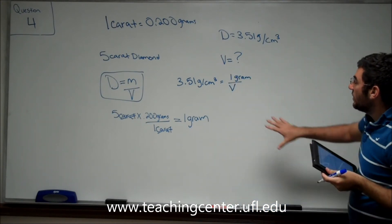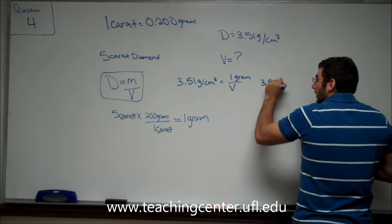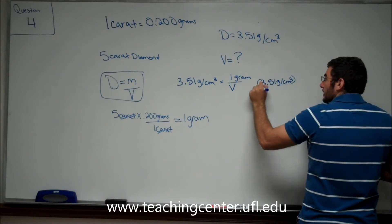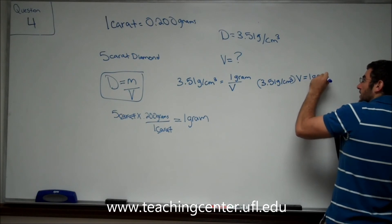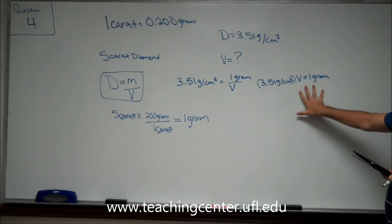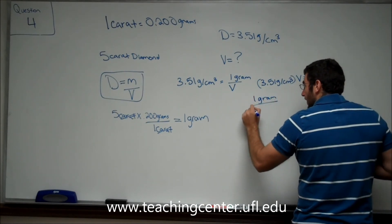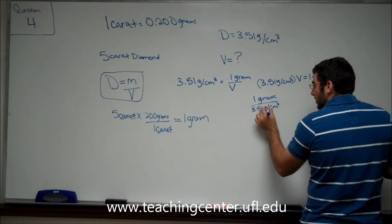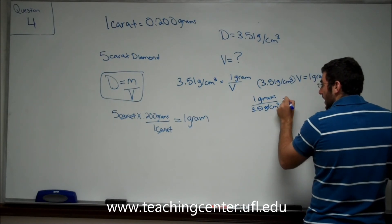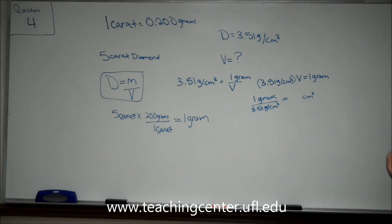Now, in order to rearrange this, we could say that 3.51 grams per centimeter cubed times our unknown volume equals 1 gram. So, in order to solve for our volume, we do 1 gram divided by 3.51 grams per cubic centimeter. You notice here that the grams cross out, and you notice that we are left with cubic centimeters as our volume.